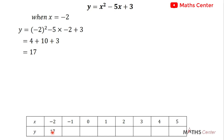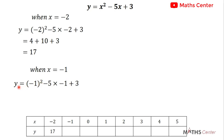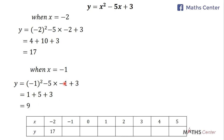The next x value is -1. Remember to put the negative number in brackets when squaring. So y = (-1)² - 5 × (-1) + 3 = 1 + 5 + 3 = 9. When x = -1, y = 9.